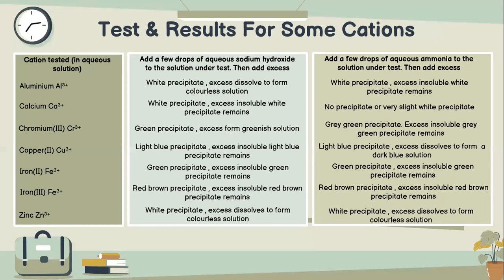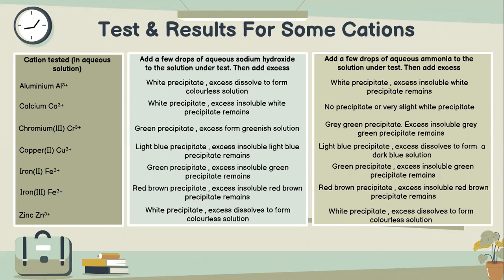For zinc Zn2+: when we add a few drops of aqueous sodium hydroxide to the solution under test, then add excess — white precipitate forms, excess dissolves to become a colorless solution. On the other hand, when we add a few drops of aqueous ammonia to the solution under test, then add excess — white precipitate forms, excess dissolves to form a colorless solution.